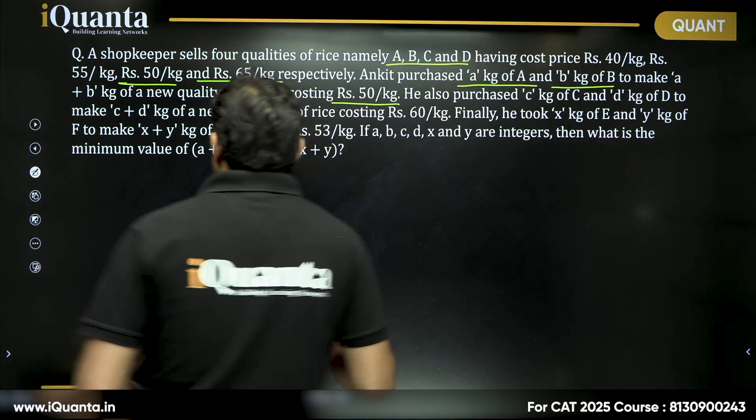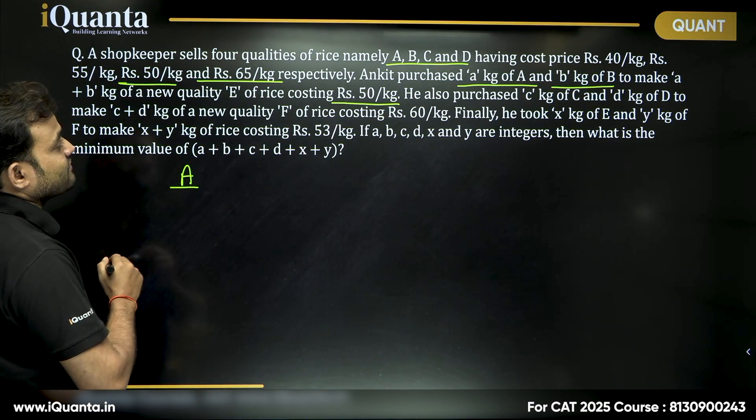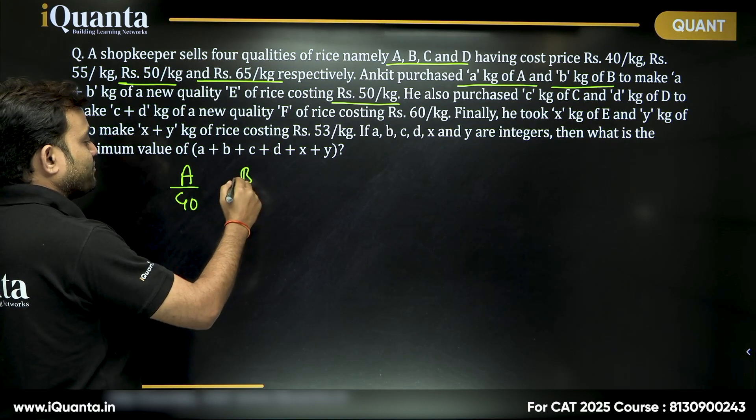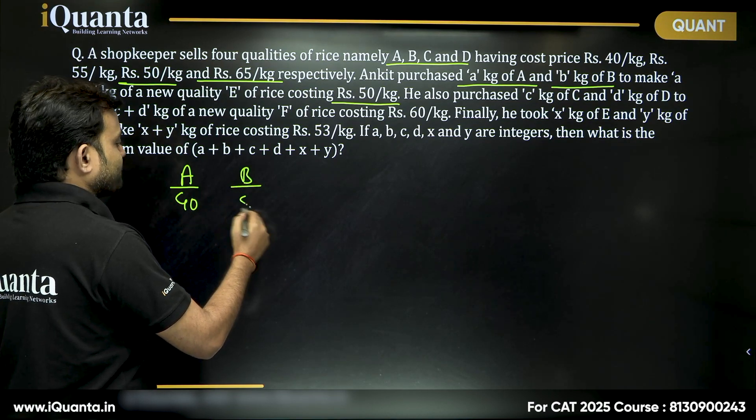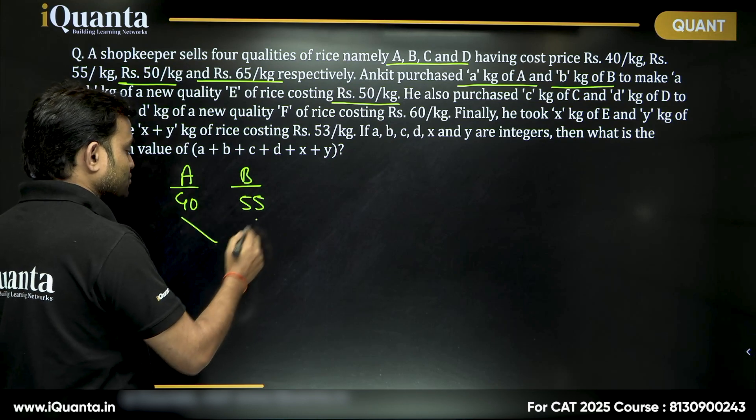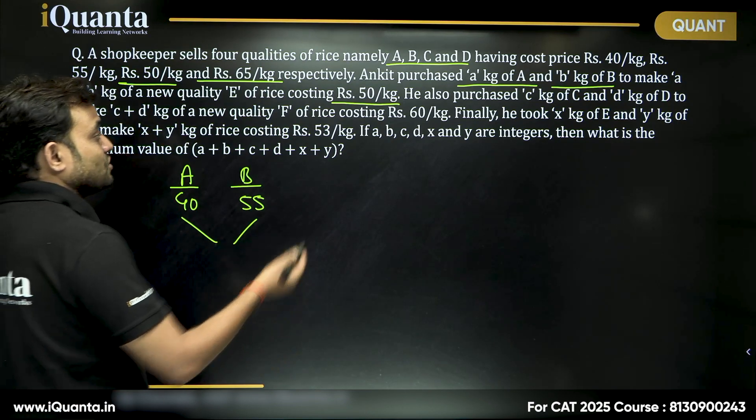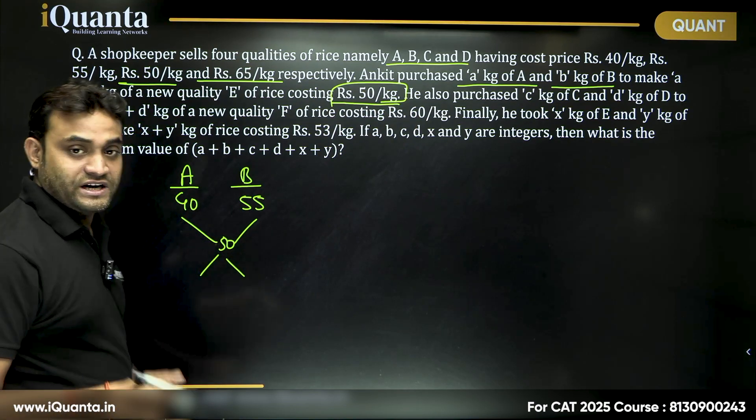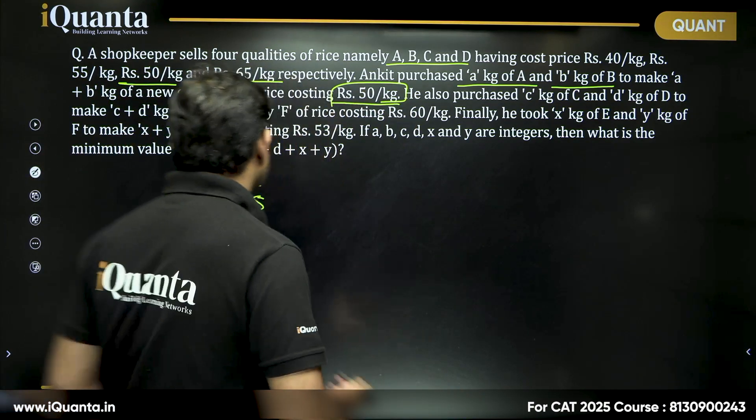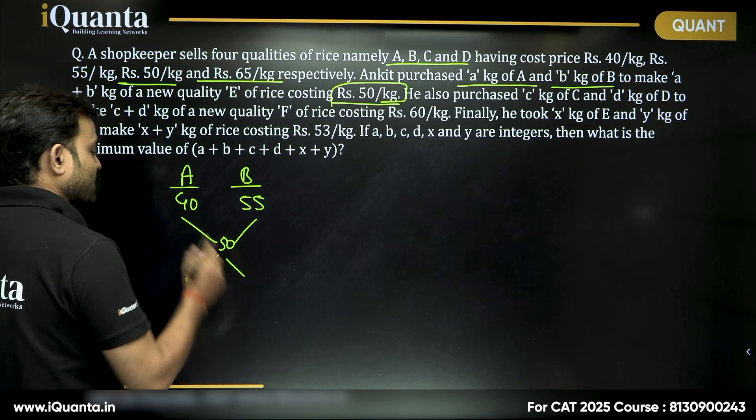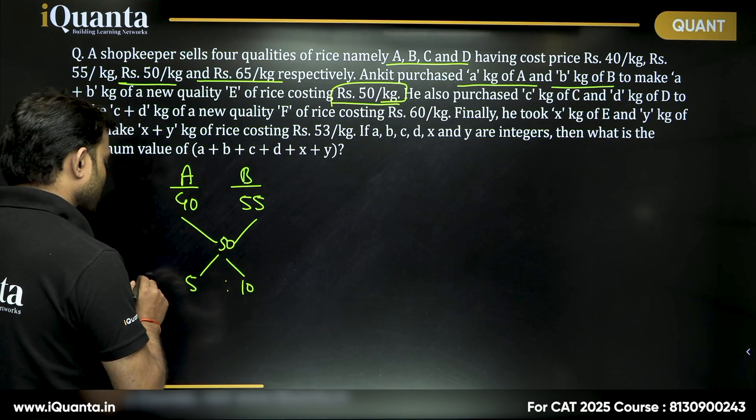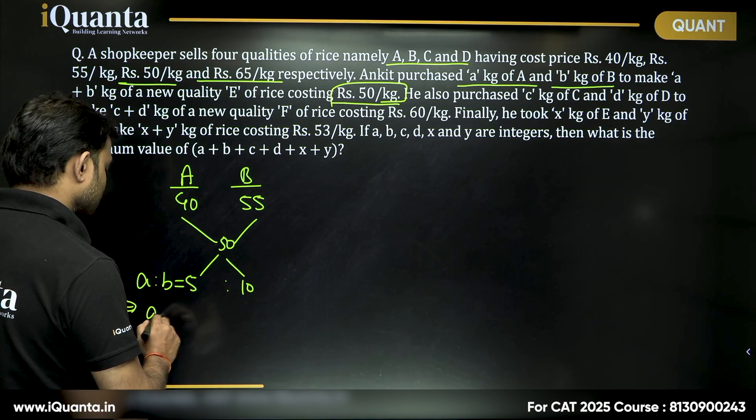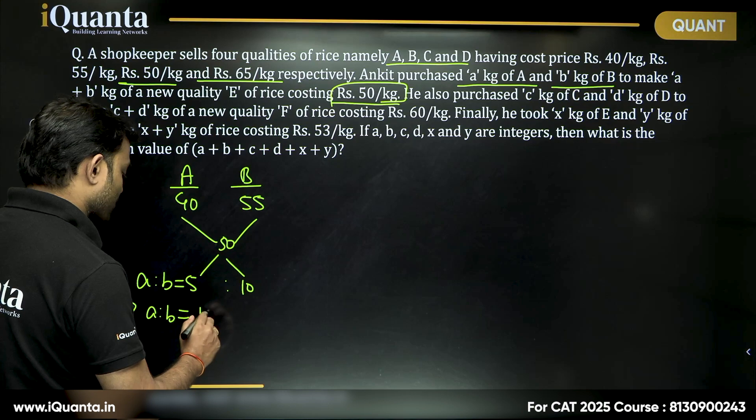So, what do we know? The price of A is given which is 40, the price of B is given which is 55, and taking these two together in some ratio, we need to make rice E worth 50 rupees per kg. We can definitely use the allegation here. 55 minus 50 is 5, 50 minus 40 is 10. So A is to B is equal to 5 is to 10, or we can say A is to B is 1 is to 2.